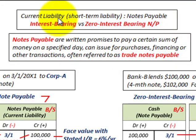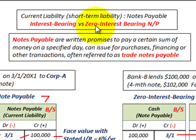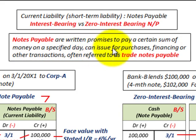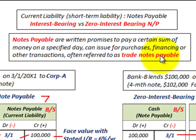We're going to be looking at a current liability — a short-term liability — specifically notes payable. Notes payable can either be interest bearing or zero interest bearing. They are written promises to pay a certain sum of money on a specified day, and can be issued for purchases, financing, or other transactions. They're often referred to as trade notes payable.